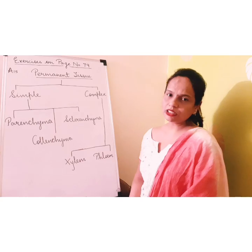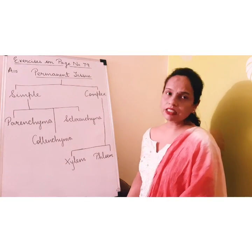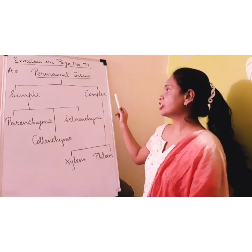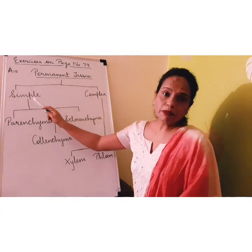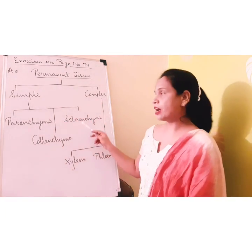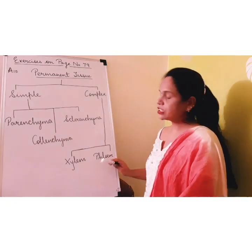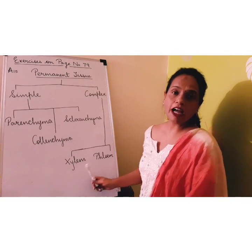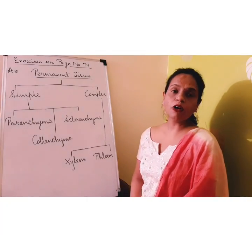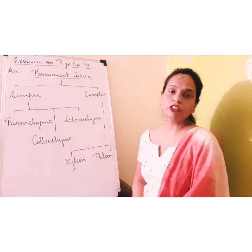We come to the last question, that is the 15th one: complete the table. Permanent tissue is divided into simple and complex. Simple permanent tissue is further subdivided into parenchyma, colenchyma, and sclerenchyma. Complex tissues are further subdivided into xylem and phloem. On Thursday, I will again take a revision test on chapter 5, that is the fundamental unit of life.